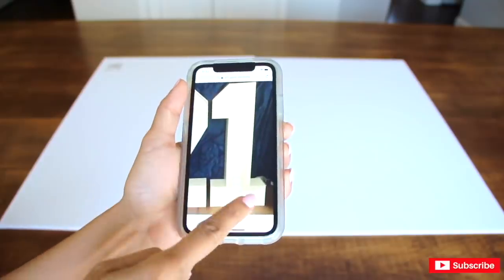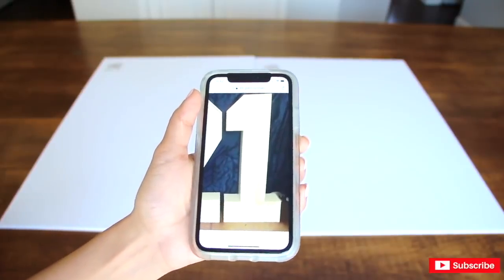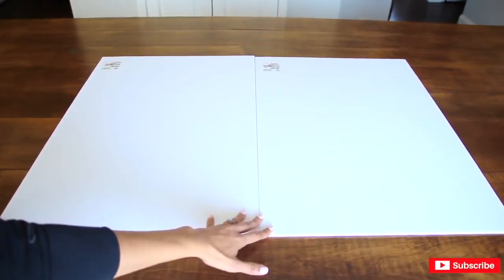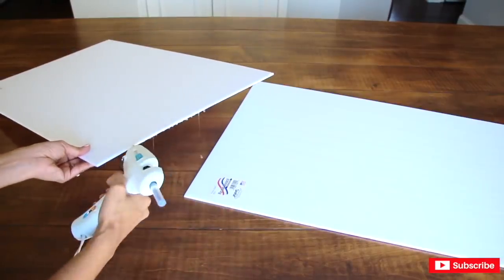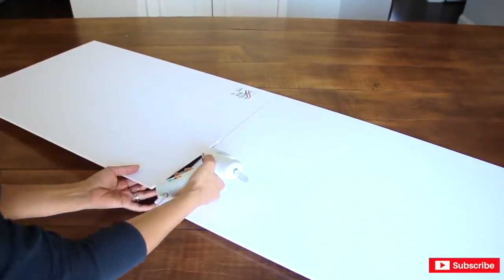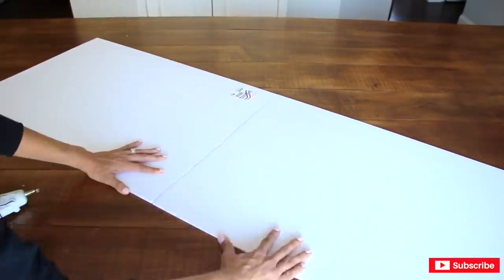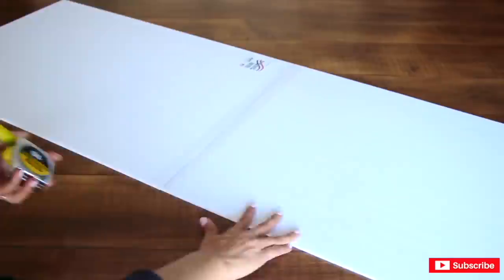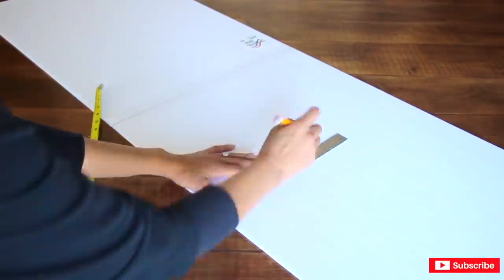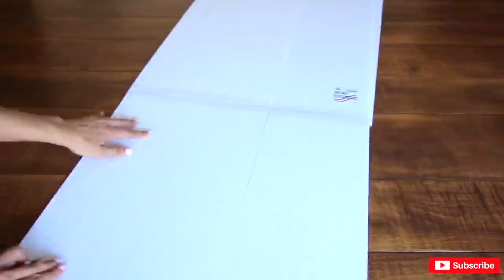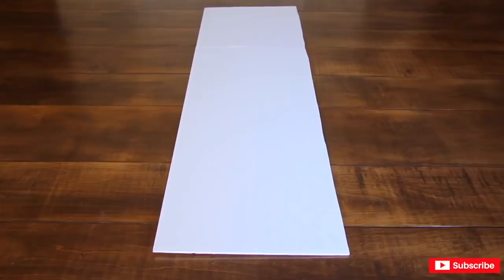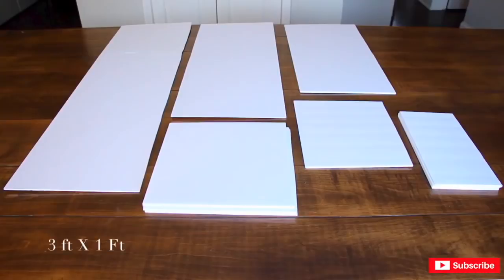For my tallest panel which is this one on the right I'm going to make it three feet. Since I do not have a foam board that's three feet tall I'm going to have to put these together and what I'm going to do is hot glue them together then tape them with transparent tape.